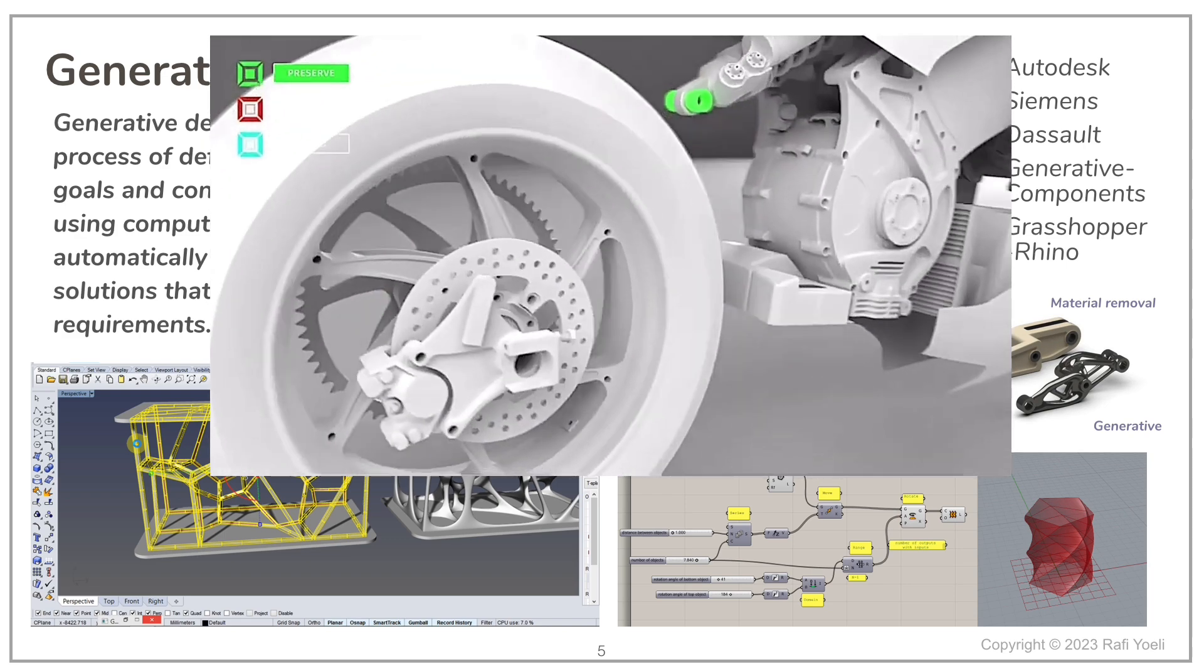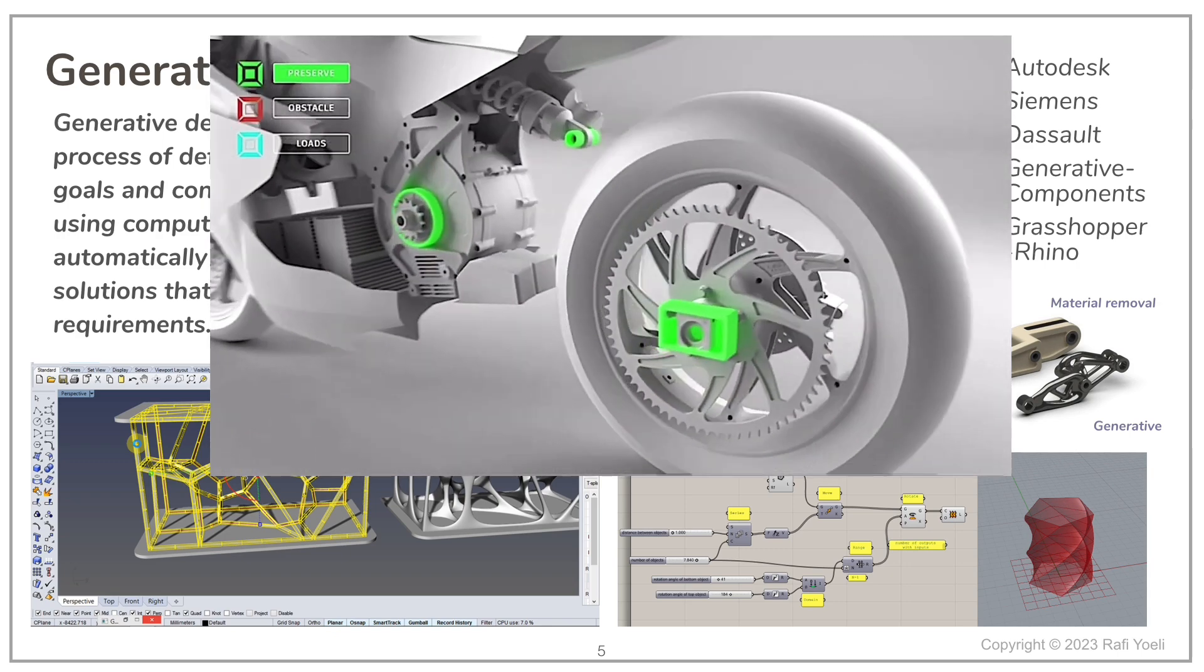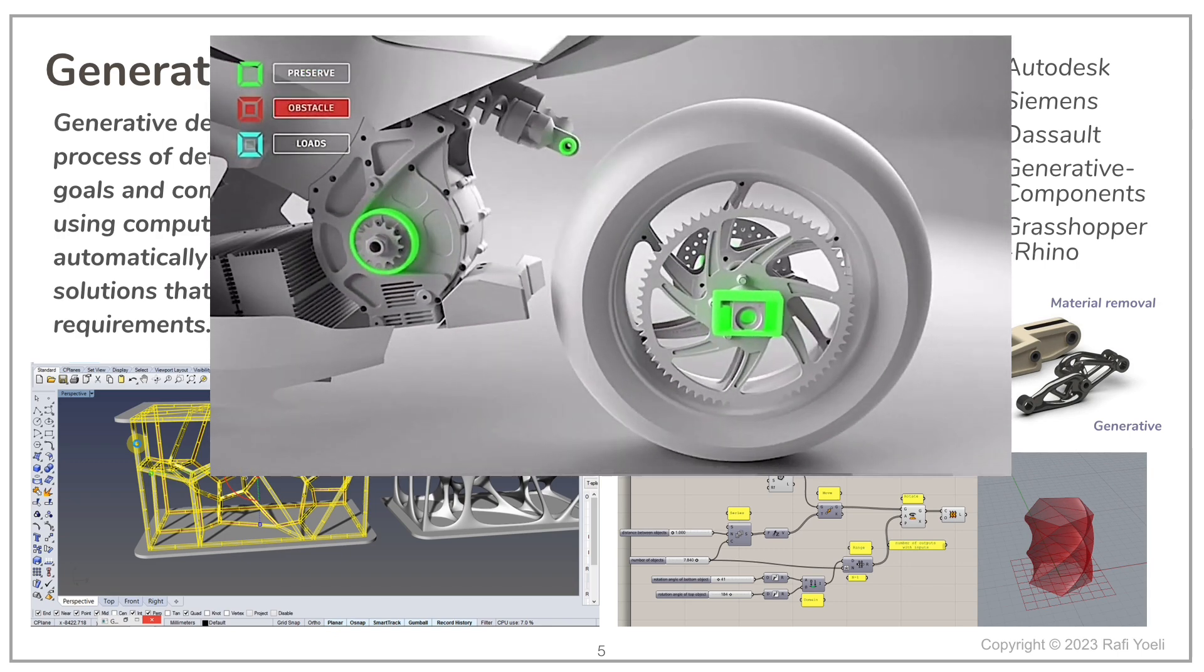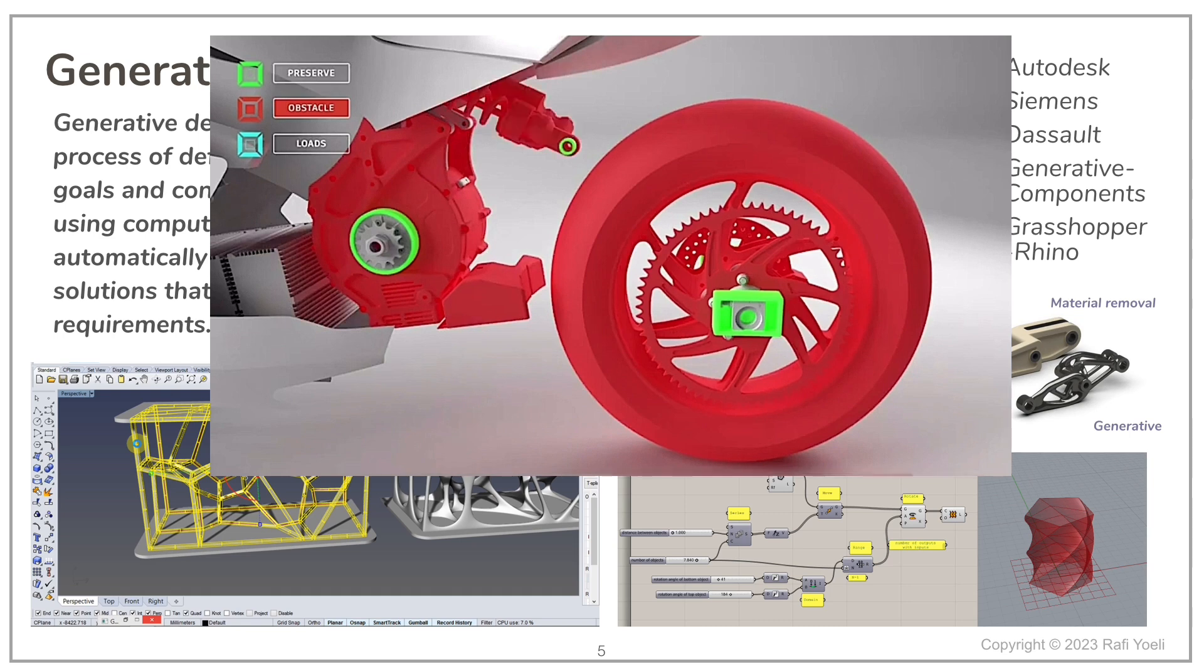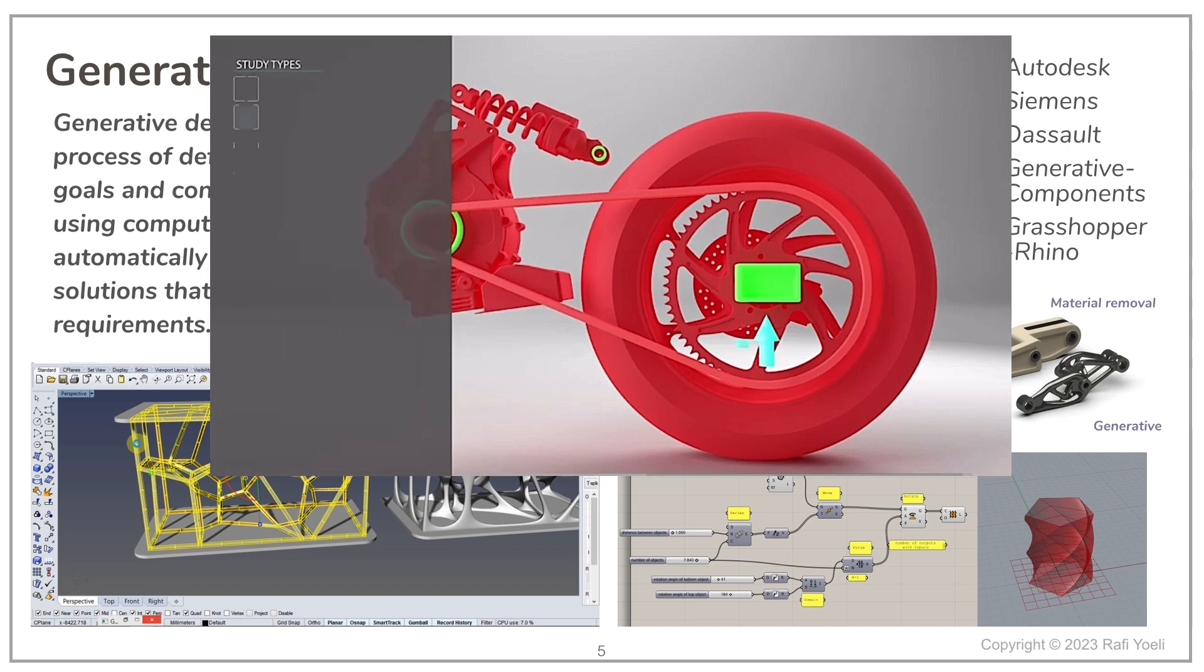The first step is defining important interface points, shown in green. The items marked in red show the envelope of constraints or obstacles that the structure must go around. These are the hard constraints.